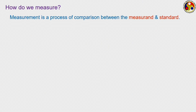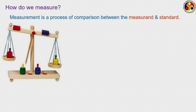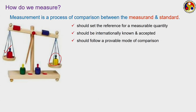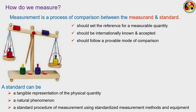Now, how do we measure? We know what measurement is, why we measure, and different levels of measurement. The process of measurement is a kind of comparison between the measurand and the standard. Here, we compare the value of the measurand or the concerned object with the value of the standard, and by the process of comparison we get the measured value. A standard should set the reference for the measurable quantity, should be internationally known and accepted, and should follow a provable mode of comparison during the measurement process. What can act as a standard? A tangible representation of a physical quantity, or a natural phenomenon that is repeatable and very reliable, can act as a very good standard.